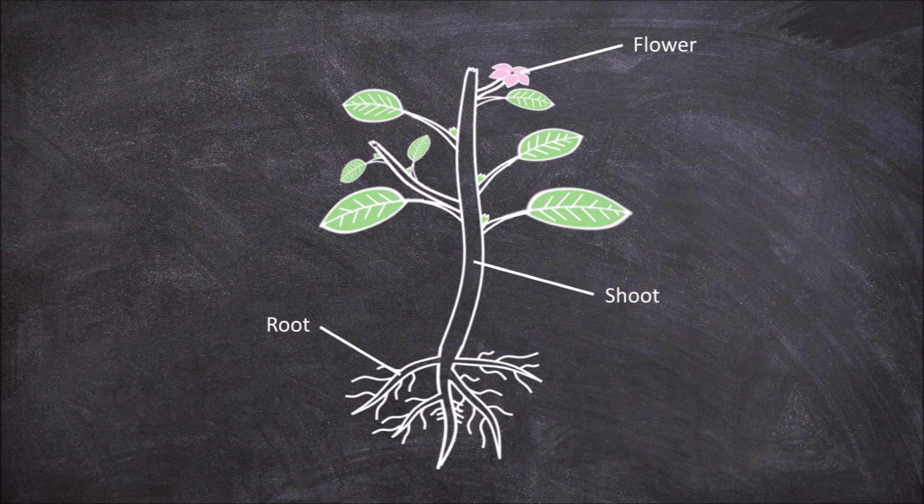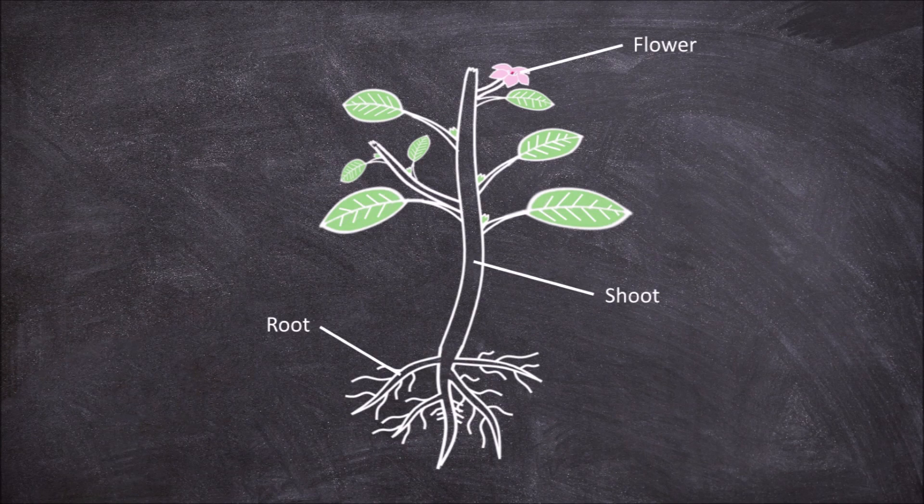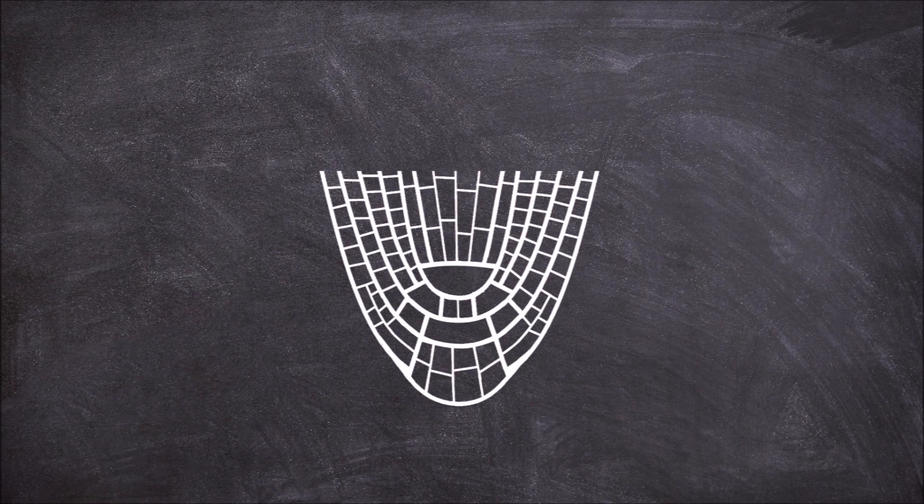Meristems give rise to various plant organs and are responsible for growth in plants. The root apical meristem is found at the tip of the root. If we take a closer look at the root apical meristem we will find it consists of five regions.